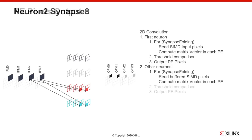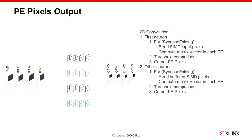At this point, the activation is performed after the 8 accumulations on the second set of output channels, and the results can then be written in the output stream. The computation will now move to the next input window to compute the second output pixel.